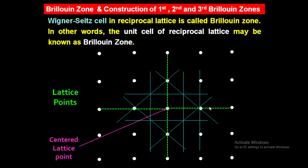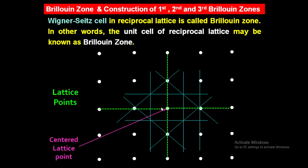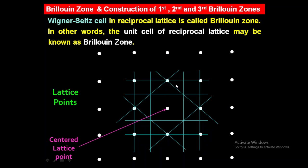I am drawing the perpendicular bisector to this green dashed line — this is the perpendicular. Again, the perpendicular bisector to the right-hand side green dashed line — this is the perpendicular bisector. To the upward green dashed line — this is the perpendicular bisector. To the left dashed line — this is the perpendicular bisector. To the downward green dashed line — this is the perpendicular bisector. If we remove the dashed lines, the area enclosed between the second Bragg plane and the third Bragg plane is nothing but the third Brillouin zone.